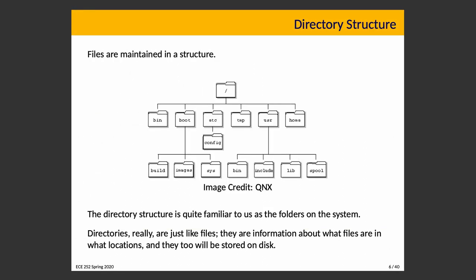Files are maintained in a structure. This is the typical Unix directory structure, usually represented as folders corresponding to actual file folders in a filing cabinet. In Unix, the root directory is the forward slash at the top, and underneath there are folders like bin, boot, etc., temp, user, and home, with subfolders underneath each of those.